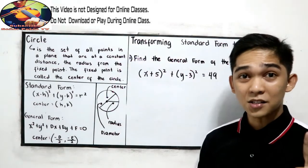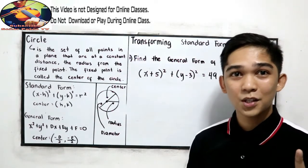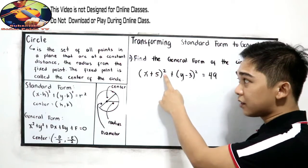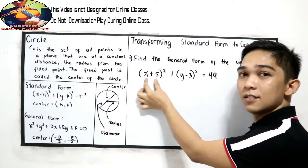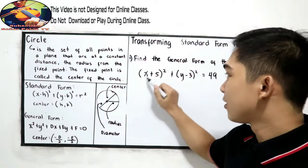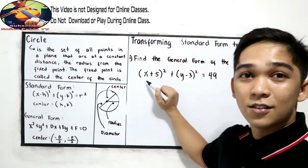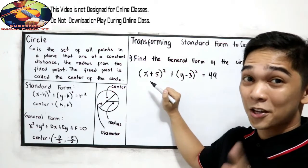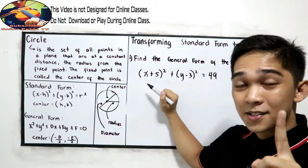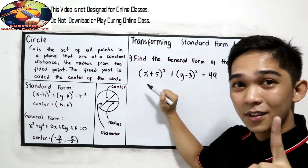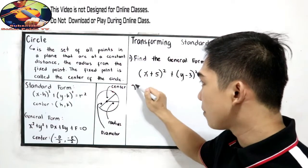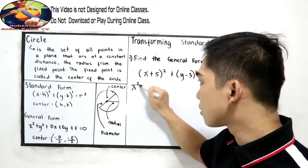Our first step: we need to expand our square of a binomial — a Grade 8 lesson on special products. First step: square the first term. That will become x squared.